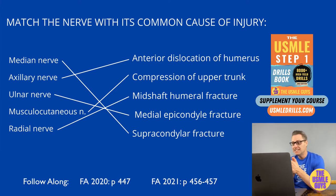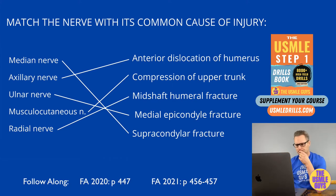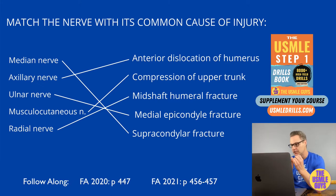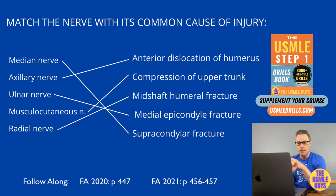Let's go over our upper extremity nerves: what they innervate, common causes of injury to each, and how those injuries may present. Starting with the axillary nerve — this originates from the posterior cord of the brachial plexus and is formed from the posterior division of the upper trunk, providing sensation to the skin over the lower aspect of the deltoid and motor supply to the deltoid and teres minor.